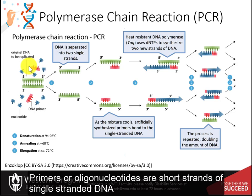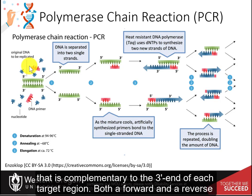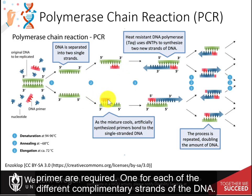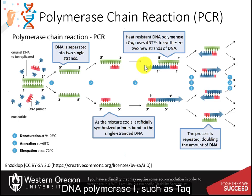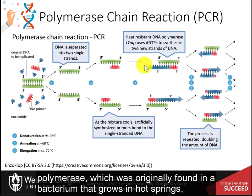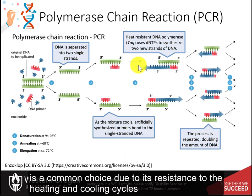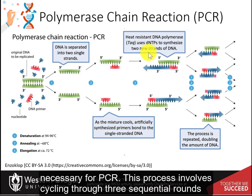Primers, or oligonucleotides, are short strands of single-stranded DNA that are complementary to the three-prime end of each target region. Both a forward and a reverse primer are required, one for each of the different complementary strands of the DNA. DNA polymerase is the enzyme that carries out DNA replication. Thermostable analogs of DNA polymerase I, such as Taq polymerase, which was originally found in a bacterium that grows in hot springs, is a common choice due to its resistance to the heating and cooling cycles necessary for PCR.